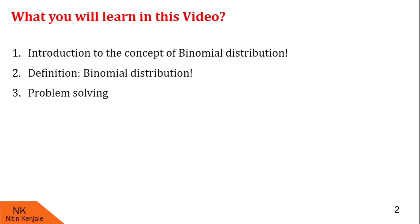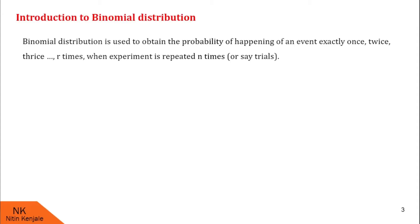So let us proceed with the introduction of the concept of binomial distribution. Binomial distribution is used to obtain the probability of happening of an event exactly once, twice, thrice, or r times when an experiment is repeated n times or performed n times. These n times are also called as n trials.